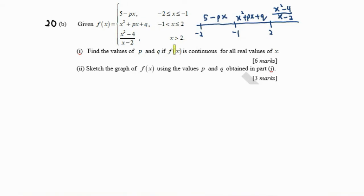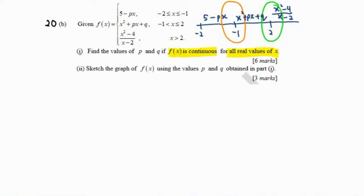For the first question, find the values of p and q where f(x) is continuous for all real values of x. When we say the function is continuous, at the point x equals negative 1 the limit from the left-hand side must equal the right-hand side. Another point will be x equals 2, because at x equals negative 1 and x equals 2 we have changes of function.